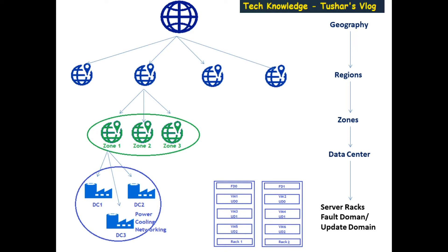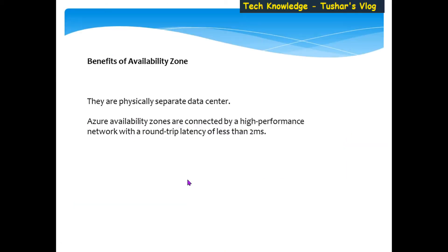Not every region supports availability zones. For availability zone support you need to have at least three zones under a region, and as of today there are 24 regions which support availability zones. Every zone will have multiple data centers, and under a data center we have multiple racks with fault domains and update domains. So the hierarchy is: geography → regions → zones → data centers → server racks.